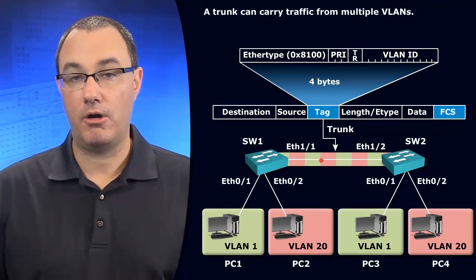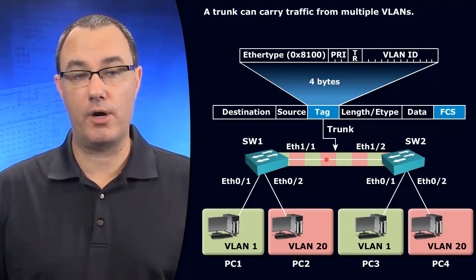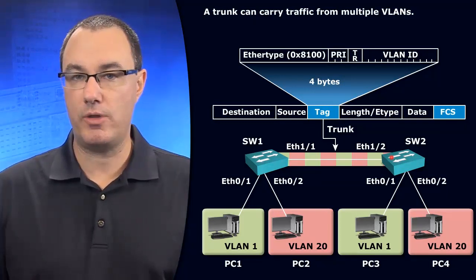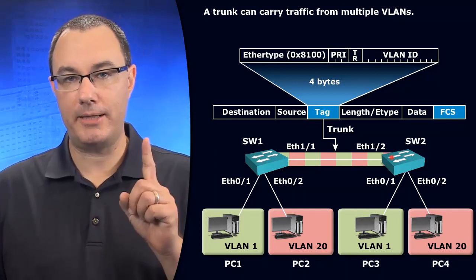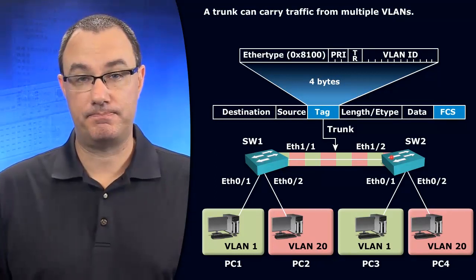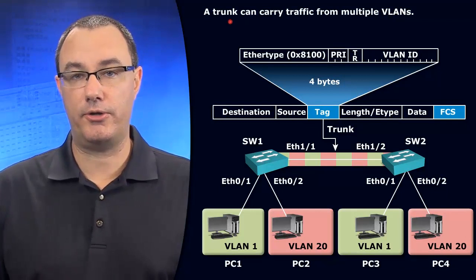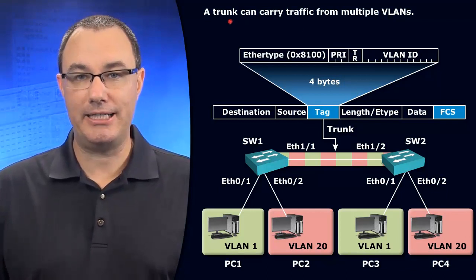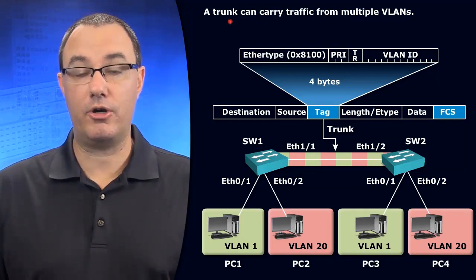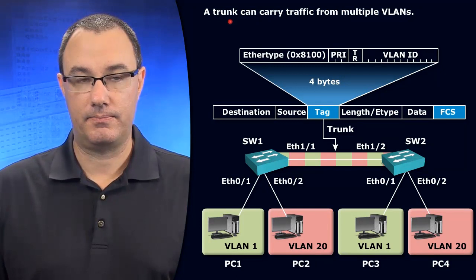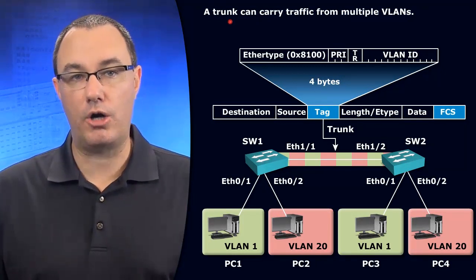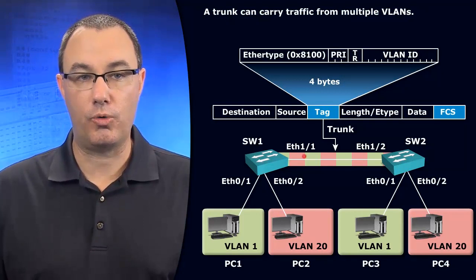We want all of our VLANs to exist between both of these switches. How do we do that? We've got one pipe with multiple data streams we want to push. That's what a trunk is going to do. Simply put, a trunk carries all VLANs. It is connectivity for all of your VLANs across that link.